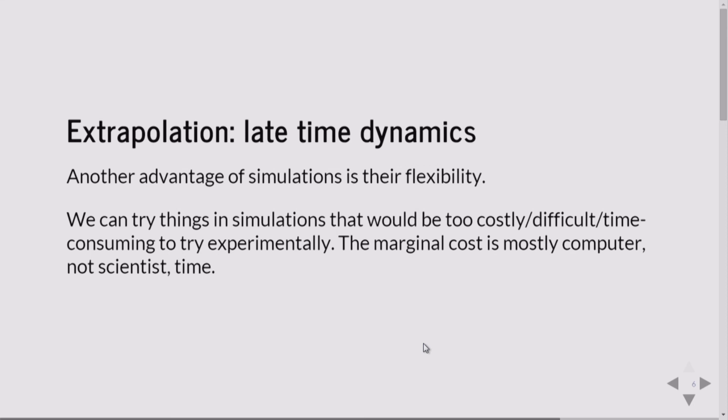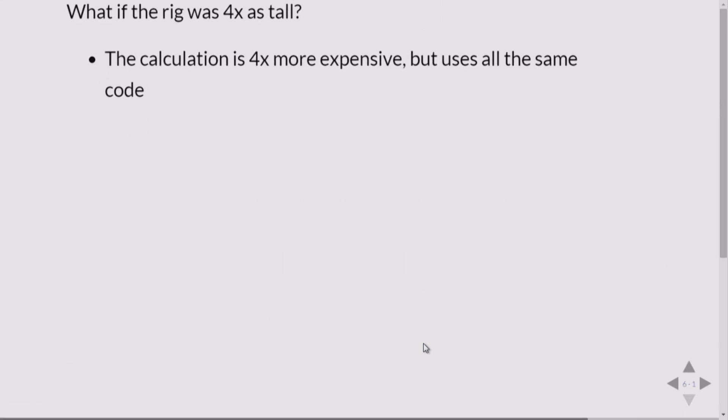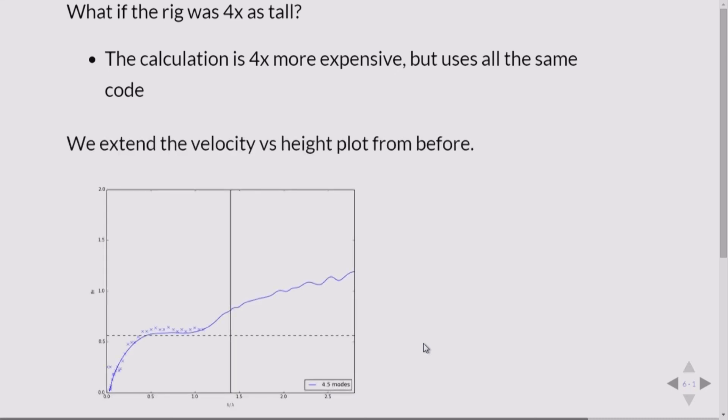Another thing we can do is just run the simulation for longer. What if the equivalent here is if we built an experiment where the rig was four times as tall? That would allow us to get to twice the aspect ratio because these things are basically falling with constant velocity. So we just extend the plot that we had before. One thing to notice is while it looked like we approached some sort of terminal velocity here, we actually continued to accelerate after that brief period. And it's unclear if this is approaching a later time higher terminal velocity or stagnation velocity, or if this is actually something linear.